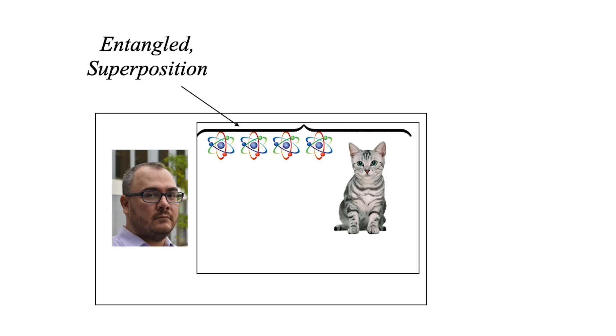But what happens if we put a box around our scientist and the cat before they measure? No collapse happens. Rather, what happens is that the scientist is now in a superposition alongside the cat. But from the perspective of the scientist, nothing has changed. Or rather, I should say, from the perspectives of the scientist, nothing has changed.